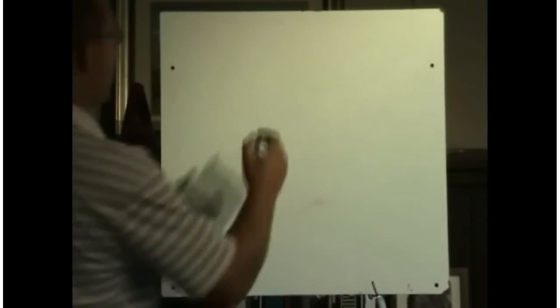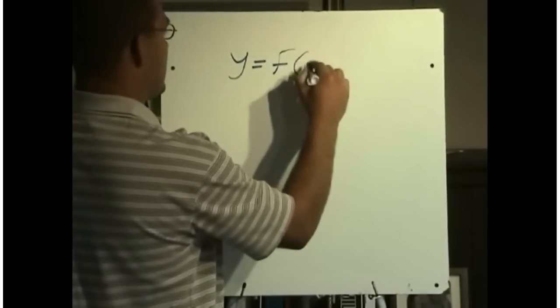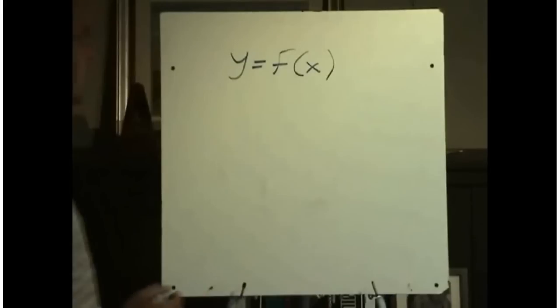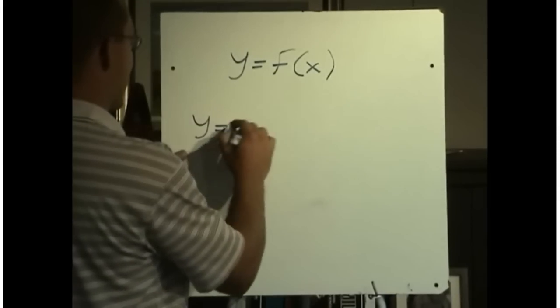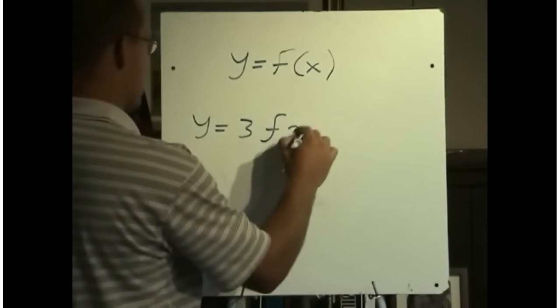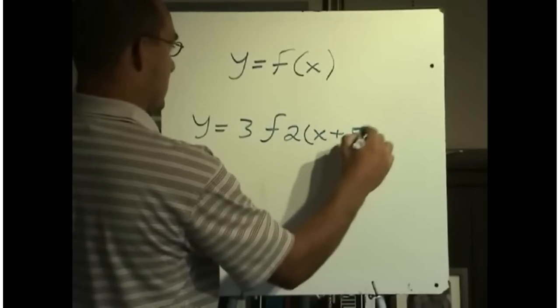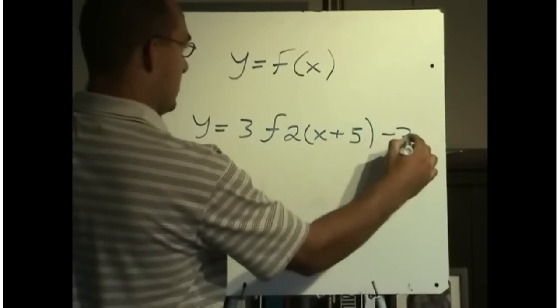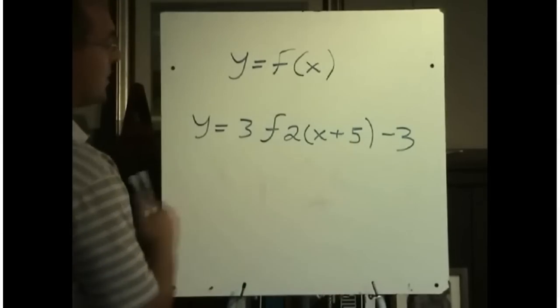So we're going to look now at combining two or more transformations. Let's say if we had a function y equals f of x, some function in x, we might now be asked what are all the transformations that have been made to this function. You can see there's several different transformations made here.